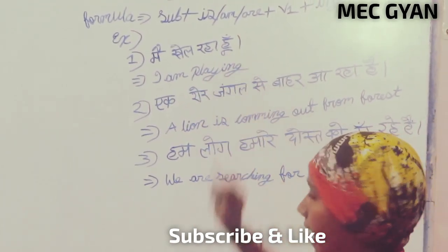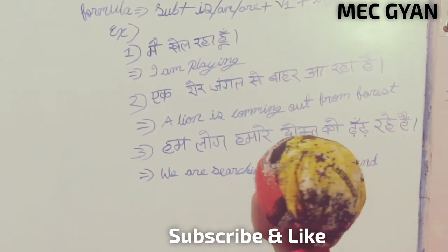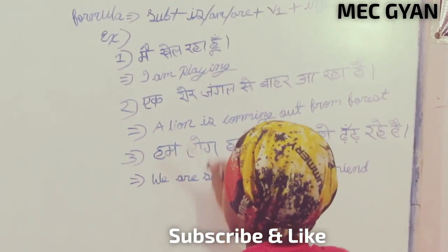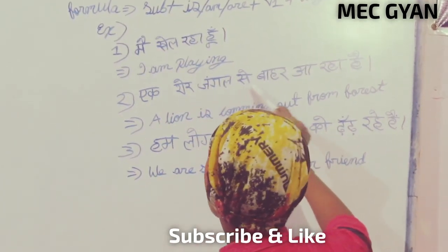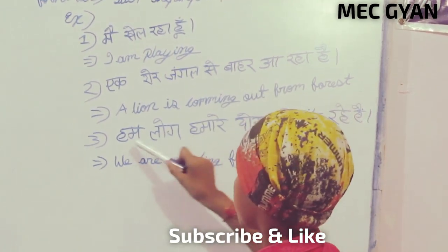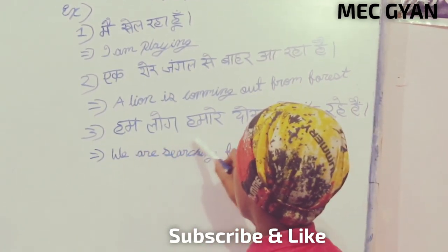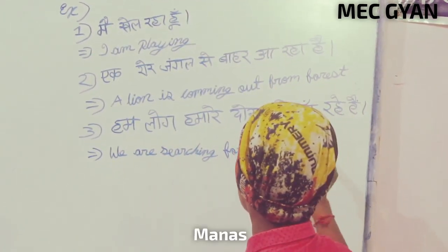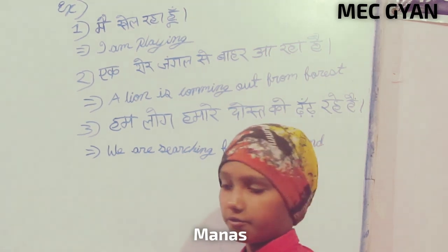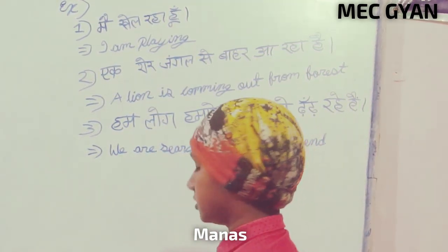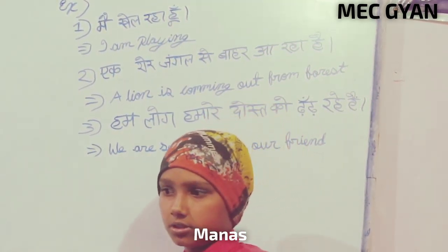Examples: I am playing. A lion is coming out from the forest. We are searching for our friend.